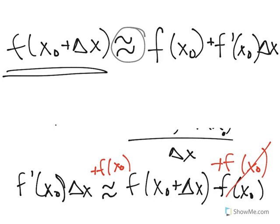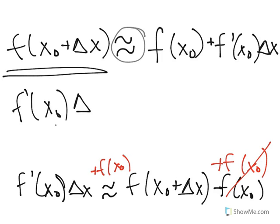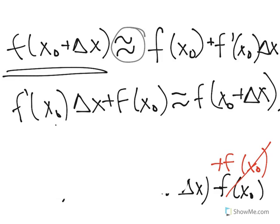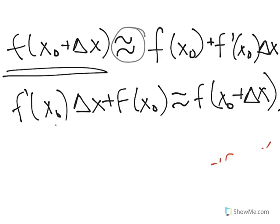And so as you can see, we have just used the basic definition of a derivative to find that f'(x naught) times delta x plus f(x naught) is close to f(x naught + delta x), which is exactly what we were given, the rule.